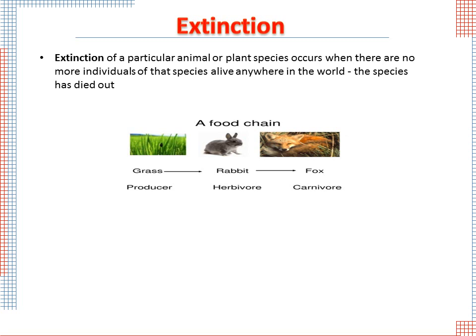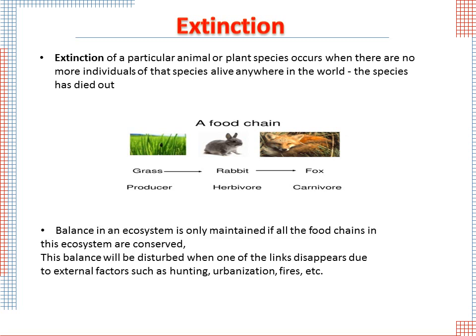If hunters hunted all the foxes, the number of rabbits will increase and they will eat all the grass, then die because of the lack of food. If all rabbits were killed, the fox will also die. Balance in an ecosystem is only maintained if all the food chains in that ecosystem are conserved. This balance will be disturbed when one species disappears due to external factors such as hunting, urbanization, or fires.